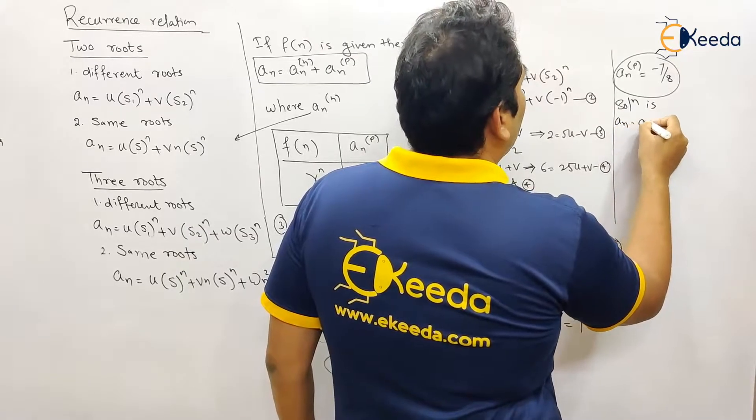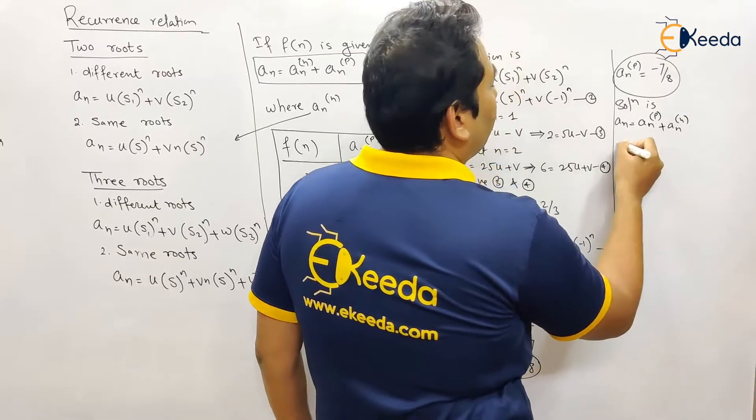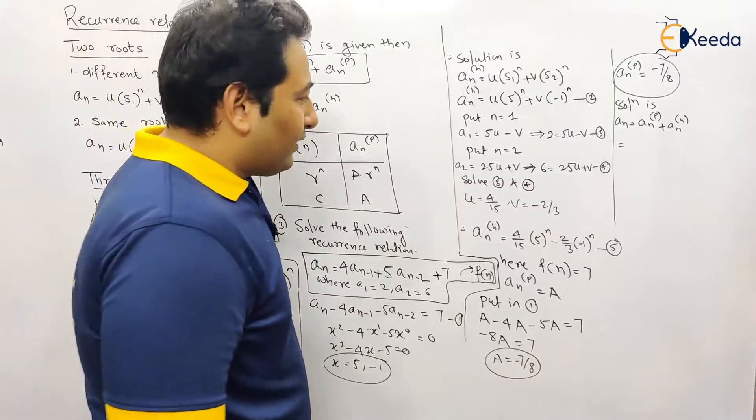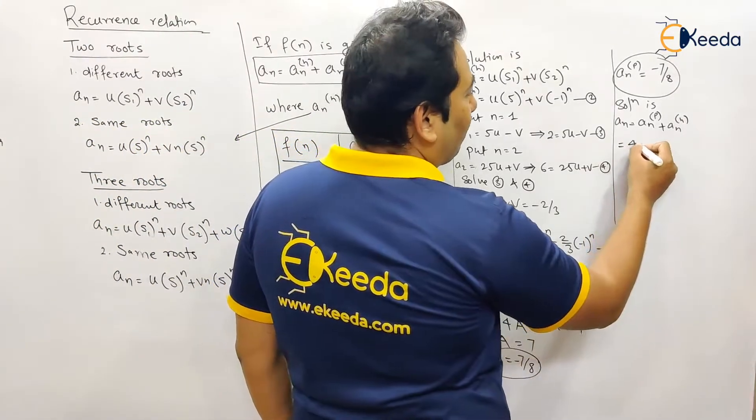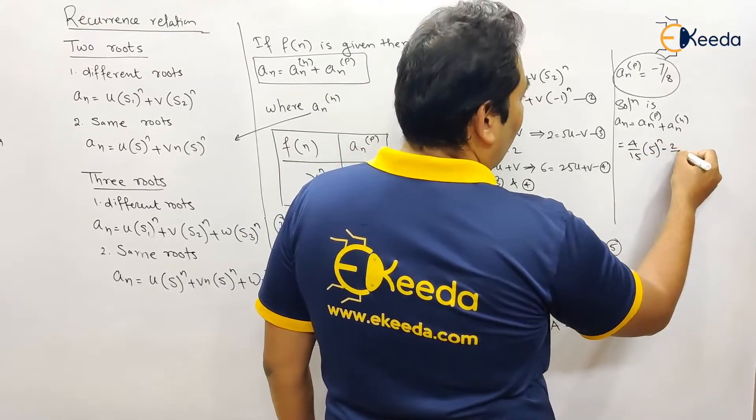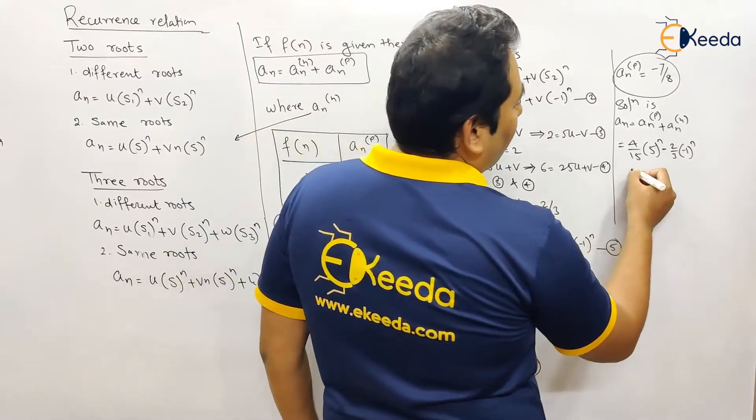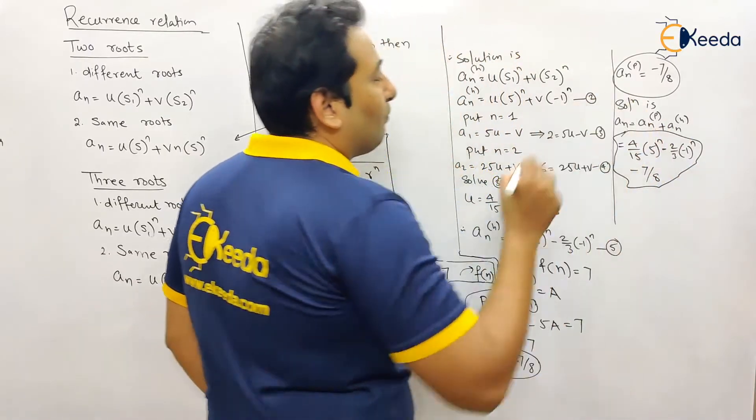A_n equals A_np plus A_nh. So what is your A_nh? From equation number five, that is 4/15 × 5^n - 2/3 × (-1)^n plus A_np. So A_np is -7/8. This is your required result for this particular problem.